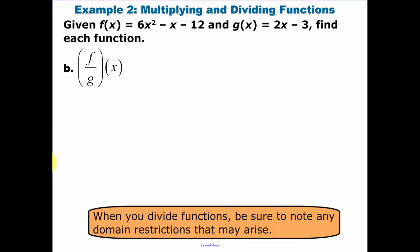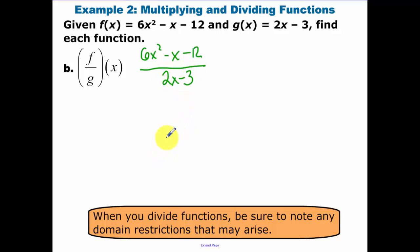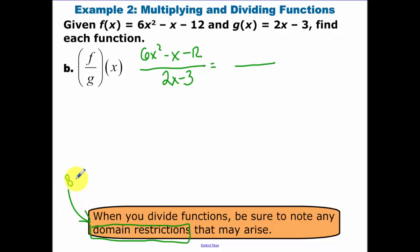For dividing, we have f of x — which is 6x squared minus x minus 12 — divided by g of x, which is 2x minus 3. Before we simplify, we need to state any domain restrictions. That domain restriction happens before you simplify, so keep that in mind. We set 2x minus 3 in the denominator.